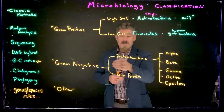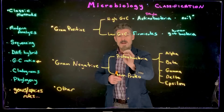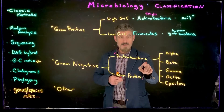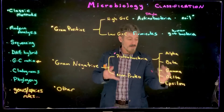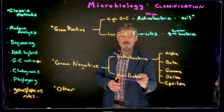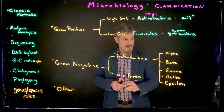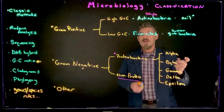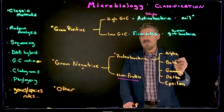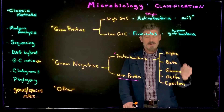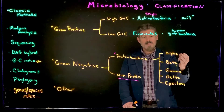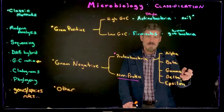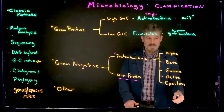For gram-negative bacteria, the major group is the Proteobacteria. The others that don't fit into this are just called non-proteo, which we'll get to at the end. The Proteobacteria are then broken into several subgroups: alpha-proteobacteria, beta-proteobacteria, gamma-proteobacteria, delta, and epsilon.